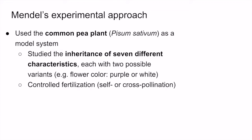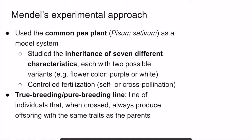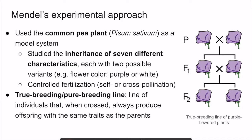We can either mate plants of the same type or plants of different types with different phenotypes. Also important to note is that Mendel established true breeding, also known as pure breeding lines. A true breeding line is a line of individuals that, when crossed, always produce offspring with the same traits as the parents. Here we have an example of a true breeding line of purple-flowered plants. When purple-flowered plants are crossed, they always produce offspring with purple flowers — we can see this in the F1 generation and again in the F2 generation. These true breeding plants always reliably produce offspring that have the same phenotype as the parents.